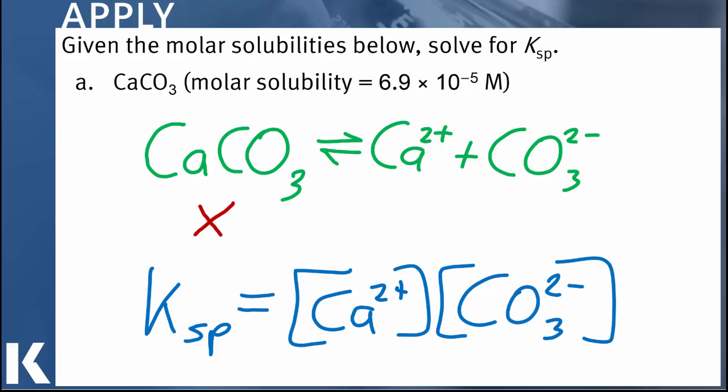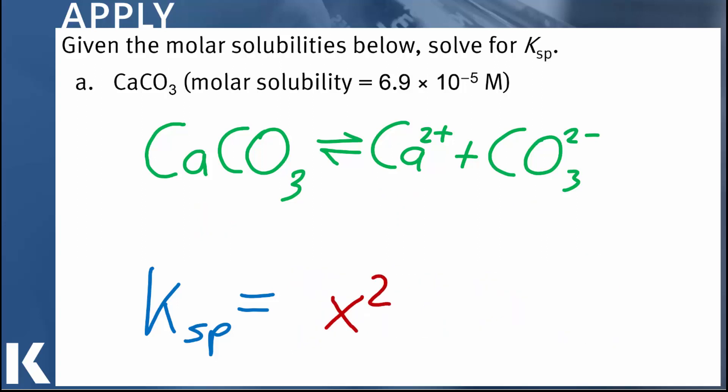Again, we'll let X stand for the molar solubility of calcium carbonate, but the stoichiometry of this equilibrium expression tells us again that for every mole of calcium carbonate that goes into solution, we get one mole of calcium and one mole of carbonate. So we'll make the same move. We'll take those values and plug them into our Ksp expression. Ksp will equal molar solubility squared, which in this case is 6.9 times 10 to the minus fifth squared.